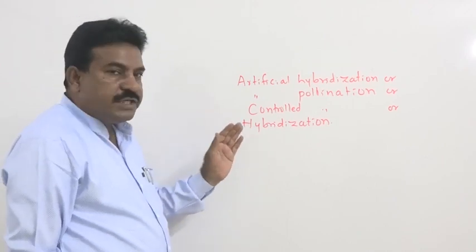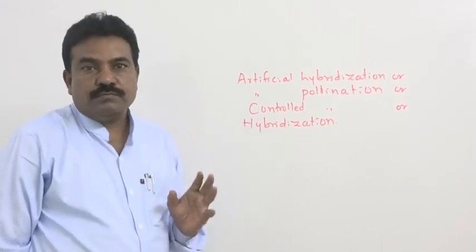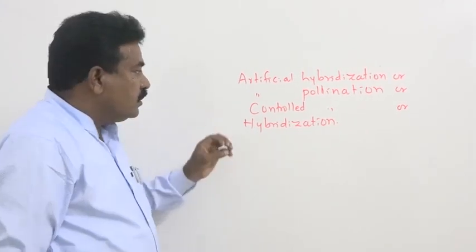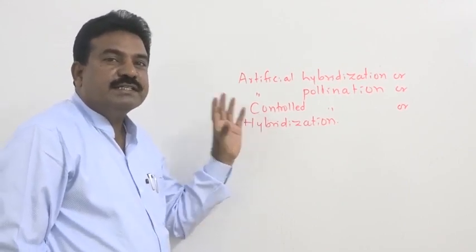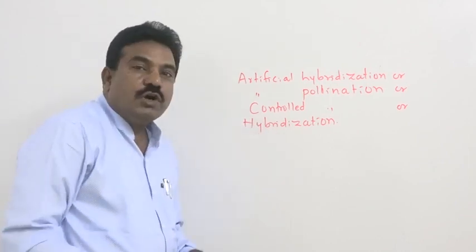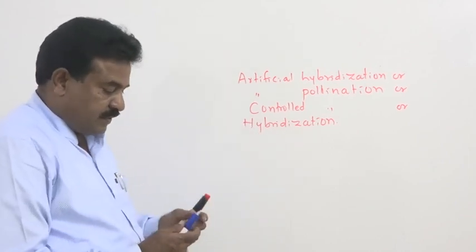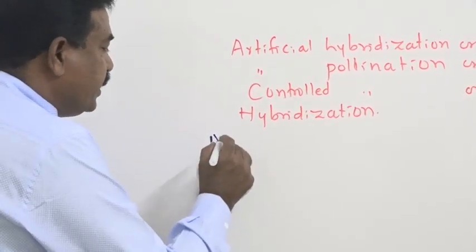And it will also called controlled pollination. Because, naturally, pollination is taking place by different pollinating agents, but it is not selective at all. It is not controlled. But this pollination takes place according to our desire. And this, in general also, scientists called as a hybridization process.